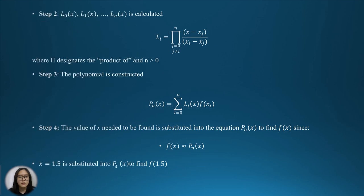Next, L_0(x), L_1(x) until L_n(x) is calculated using the formula shown in the slide, where the symbol that looks like capital Pi designates the product of, and n is larger than 0.